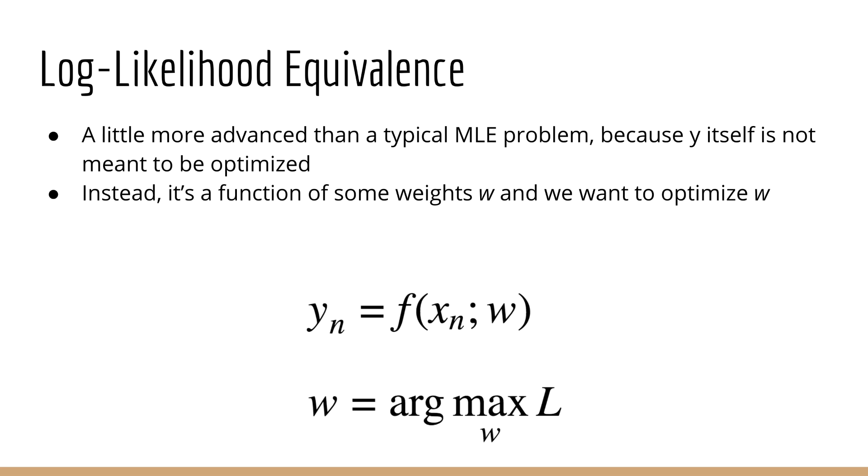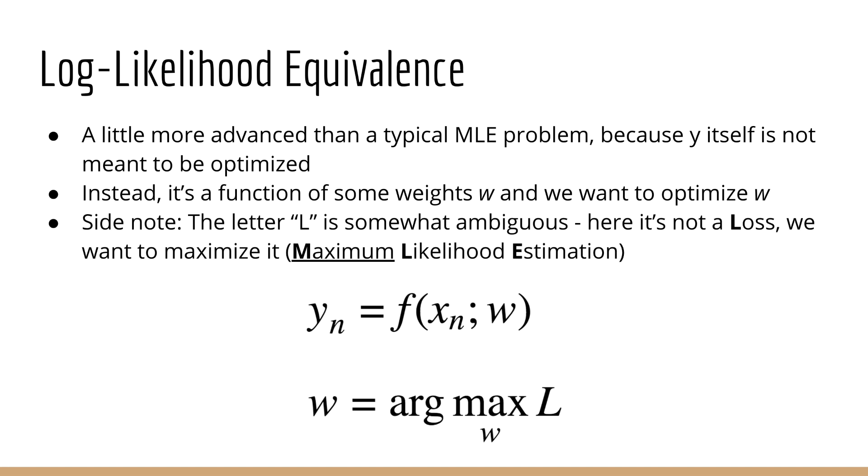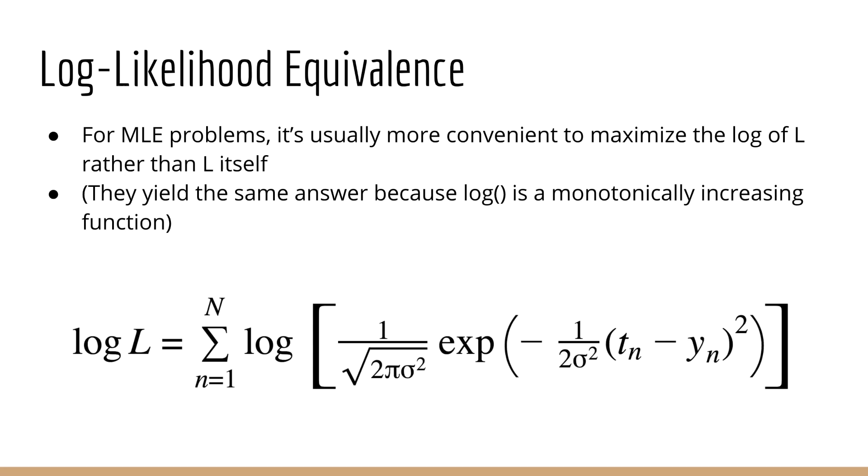By the way, when you see the letter L, you might think of loss, but in this case, we actually mean likelihood, which is something we want to maximize rather than minimize. So just keep in mind that the letter L is somewhat ambiguous depending on the context, since both of these words, which kind of mean opposite things, start with the letter L. Now remember that whenever we're solving maximum likelihood problems, it's more convenient to maximize the log likelihood rather than the likelihood directly. So let's take the log of L and see what we get.